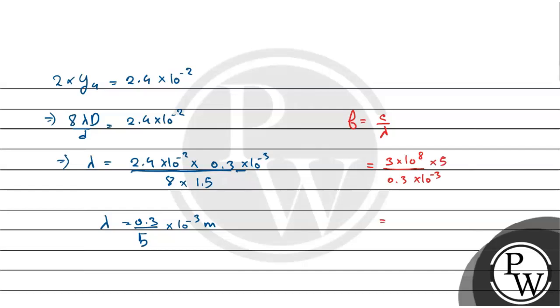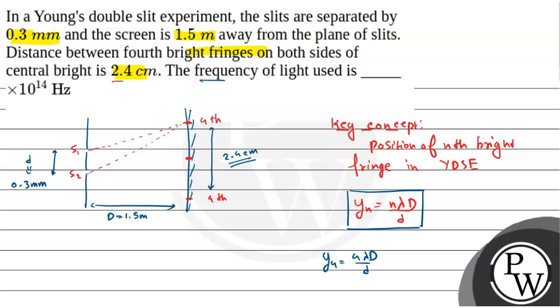So, this is equal to 5 into 10 to the power 14 hertz. So, humara frequency ka jo value hoga, that is 5 into 10 to the power 14 hertz. So, the frequency of the light used is 5 into 10 to the power 14 hertz. So, humara answer hoga 5. Hope you understand it. Best of luck.